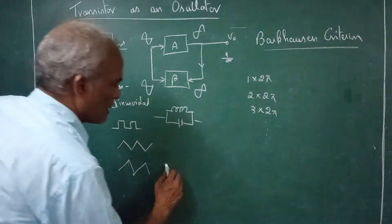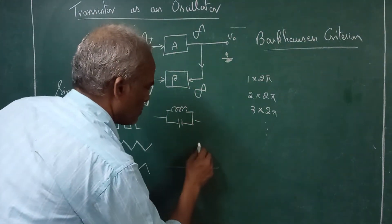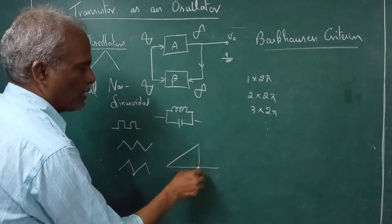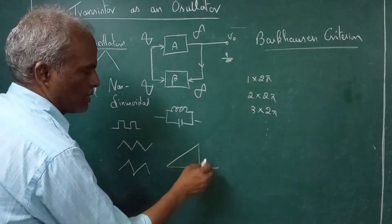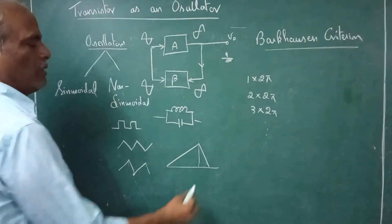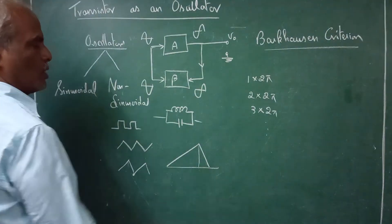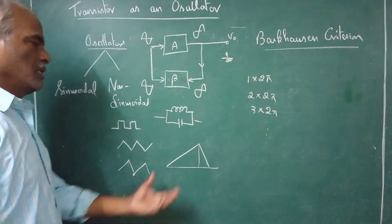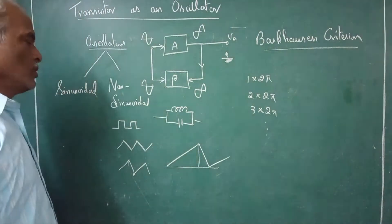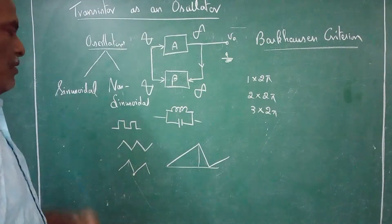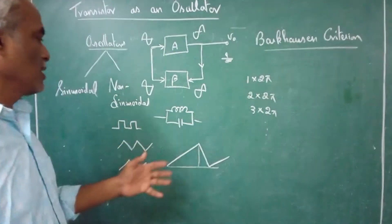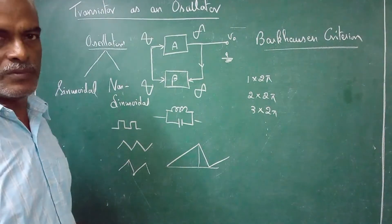Sawtooth waveform looks like this — the tracing time will be lengthy and retrace time will be very short. This type of waveform is called sawtooth waveform. Square waveform, triangular waveform — these are all non-sinusoidal waveforms.